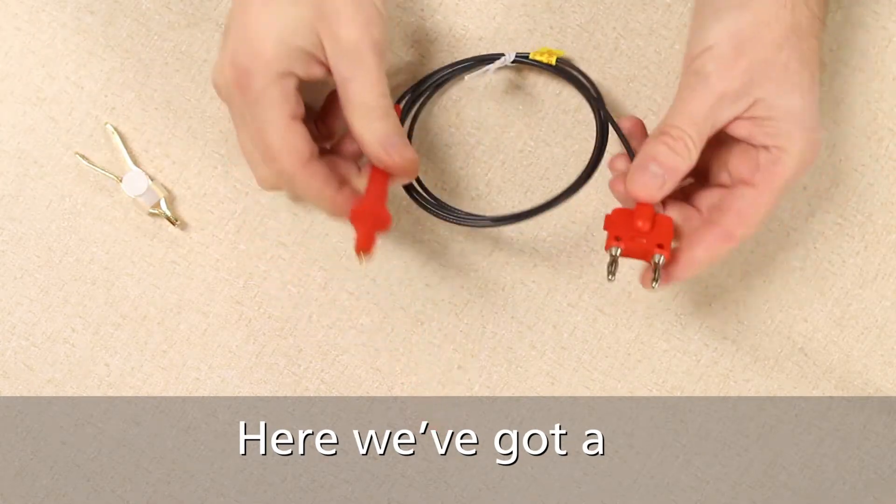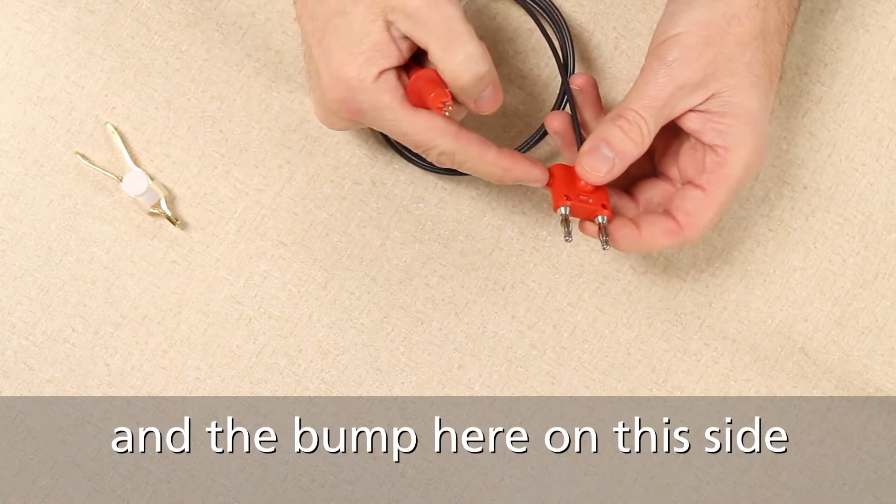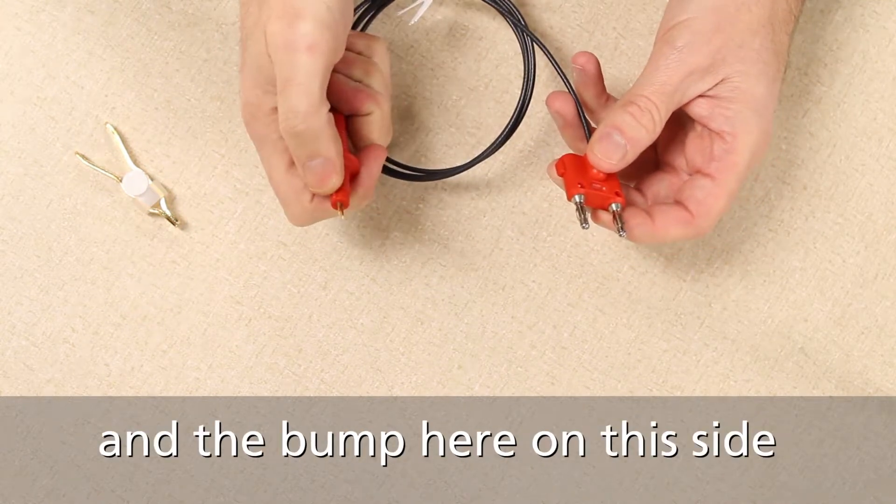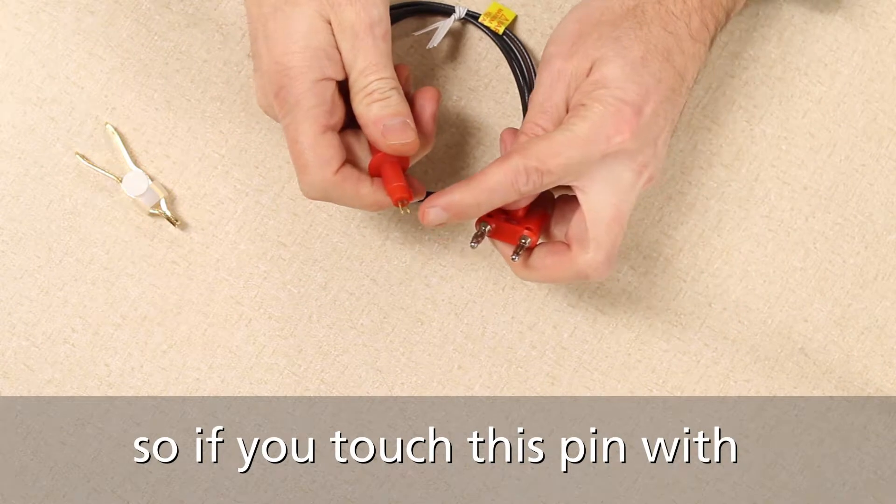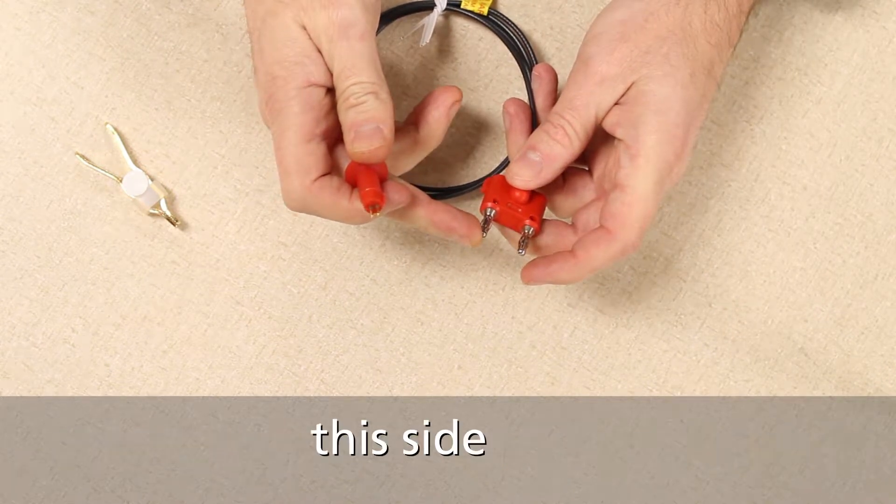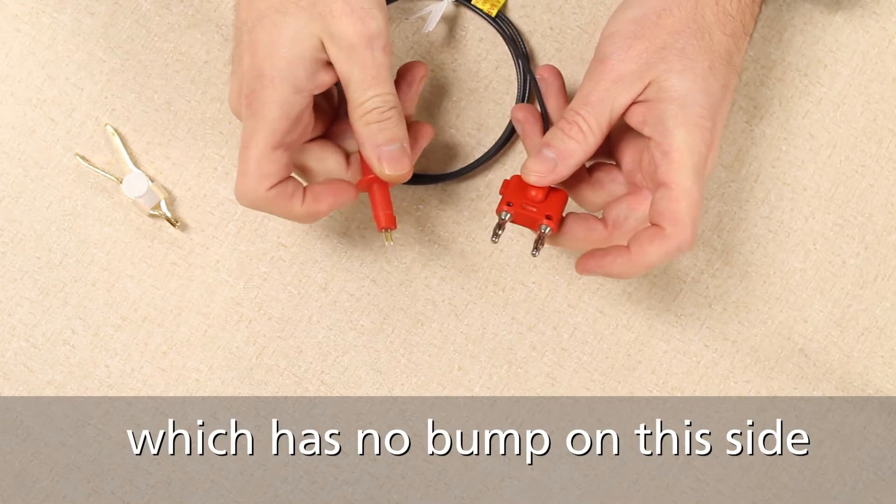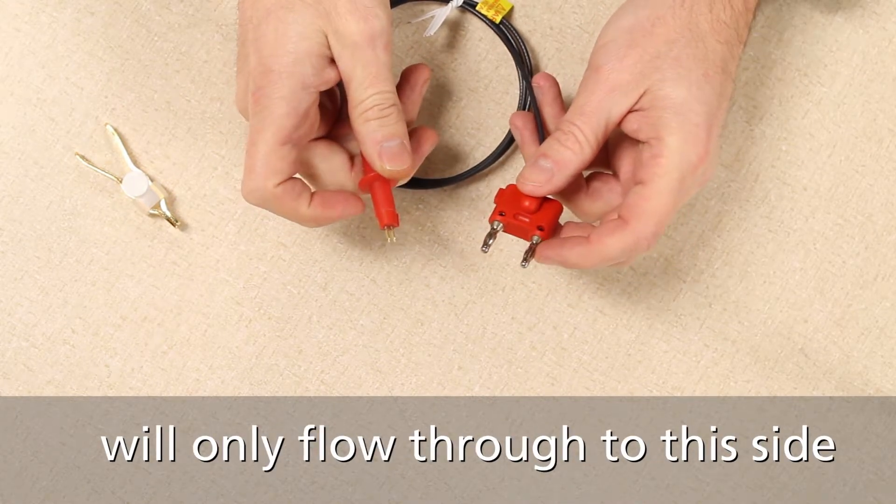Here we've got a test lead that is Kelvinized, and the bump here on this side is the ground, and the bump here on this side is the ground. So if you touch this pin with electricity, it will only flow through to this side, electricity or current. Or if you touch this one, which has no bump on this side, it will only flow through to this side.